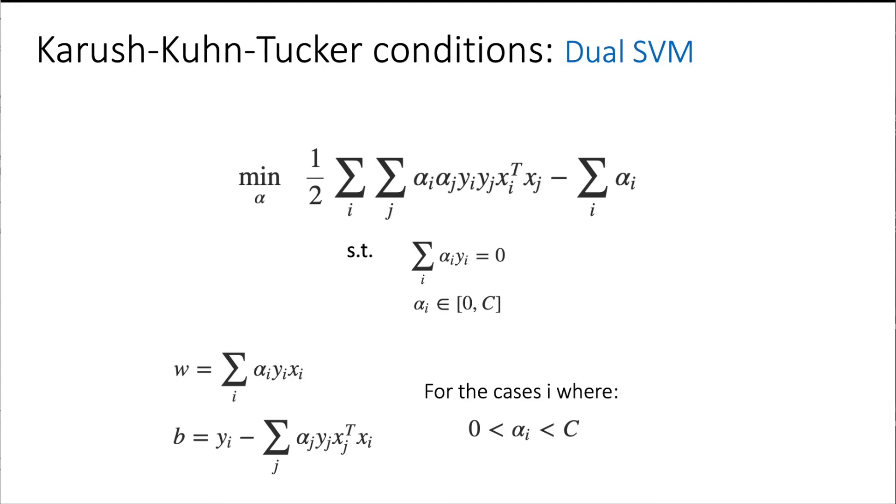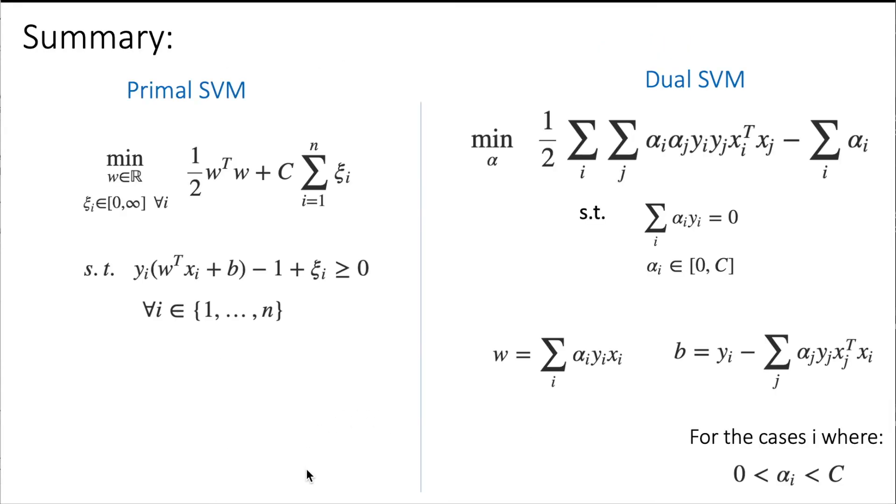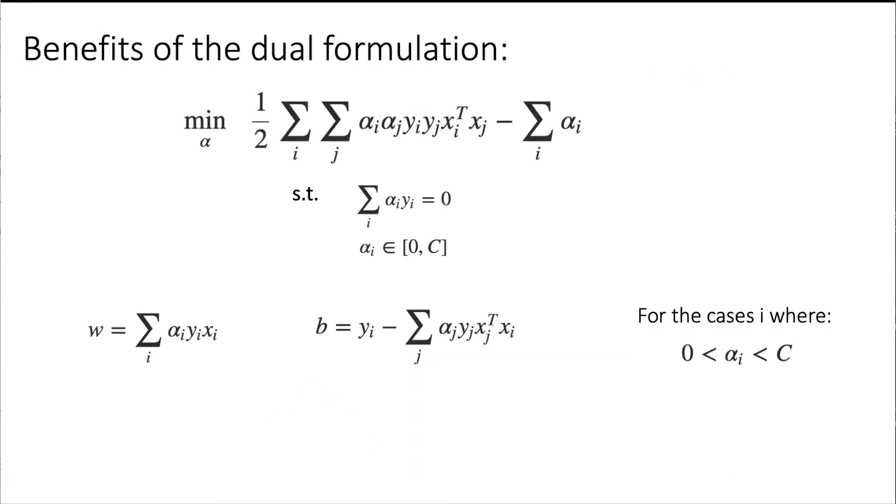So as a summary, this was the primal SVM, and by applying the KKT conditions we can end up in the dual form, such that if we solve the dual problem, we get solutions that also are valid solutions for the primal problem. And again, why we like the dual formulation?